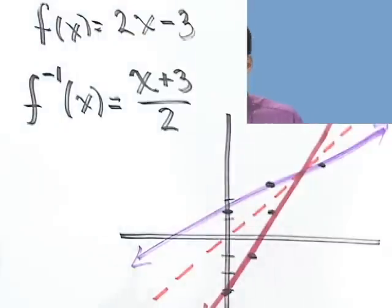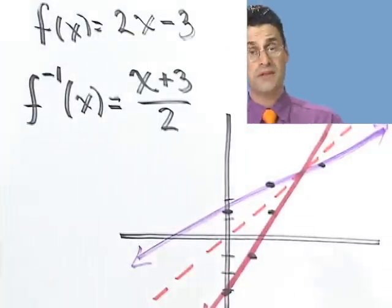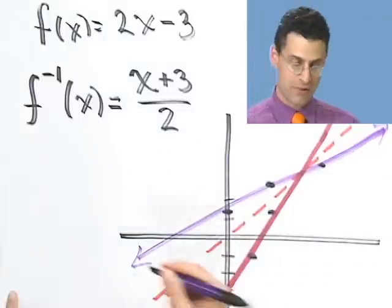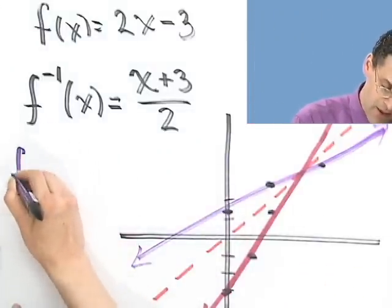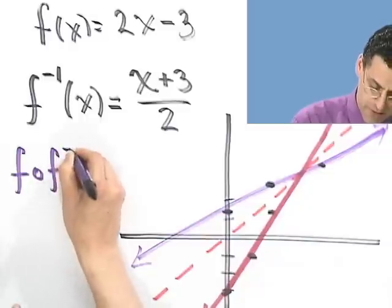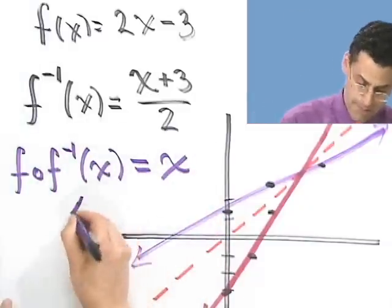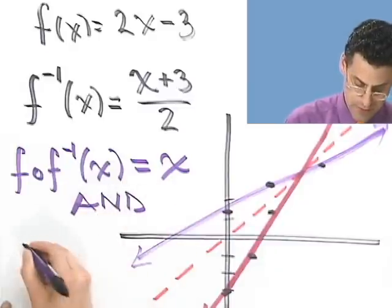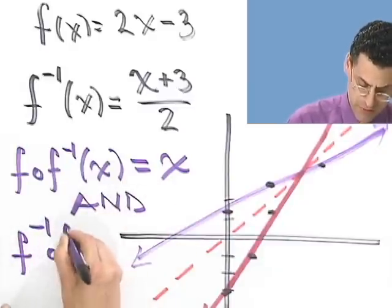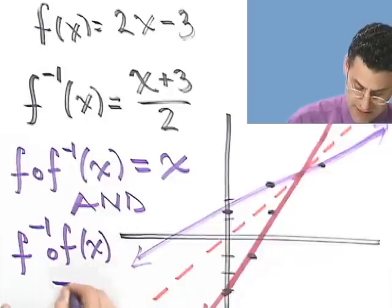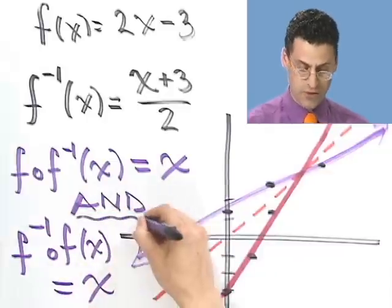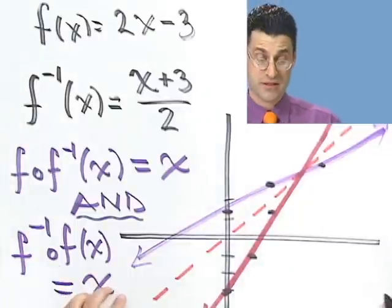Now, how can you see this? That's graphically. How could you see this now algebraically? Well, here's the property of inverse functions. They undo each other. That was the whole point. So therefore, f composed with f inverse should just give back x. And f inverse composed with f should give back x. So these two things have to hold. These two things have to hold in order to be inverses. Let's try and see if these two things really do hold in this example.